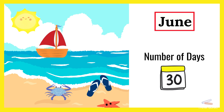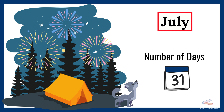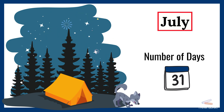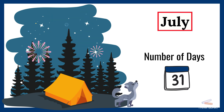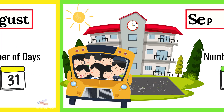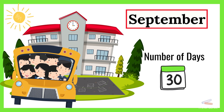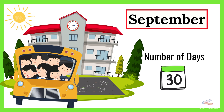July. July has 31 days. August. August has 31 days. September. September has 30 days.